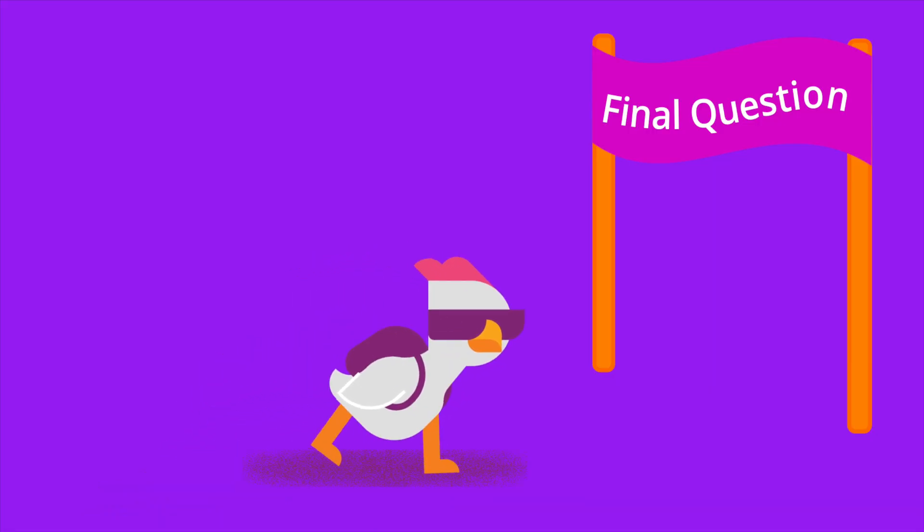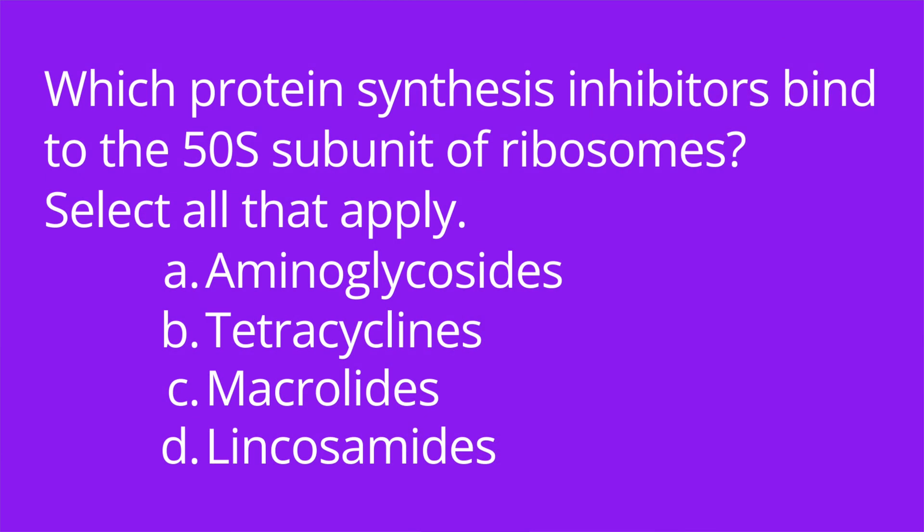Question number three: which protein synthesis inhibitors bind to the 50S subunit of the ribosomes? Select all that apply. A, aminoglycosides. B, tetracyclines. C, macrolides. D, lincosamides. The answer is C, macrolides, and D, lincosamides.